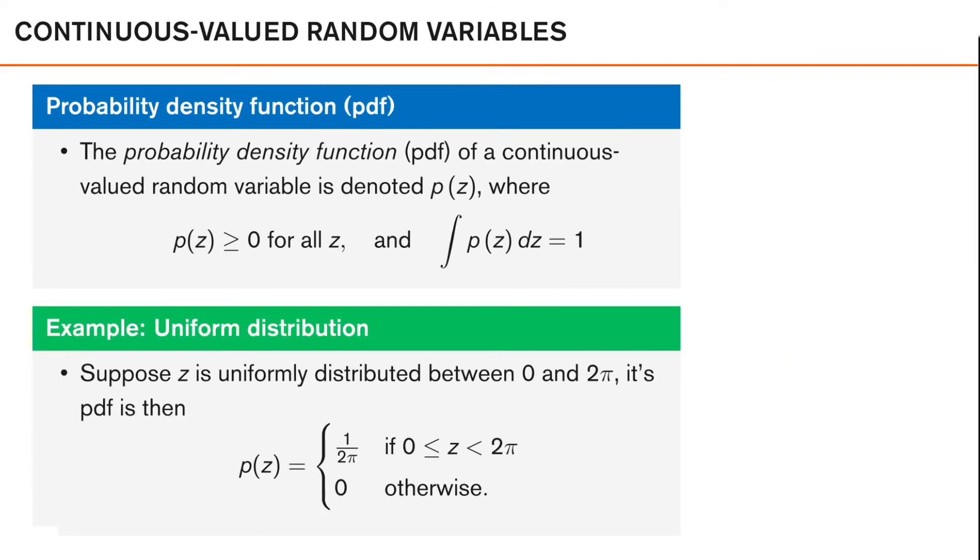Now, let's look at the corresponding description for continuous valued random variables, which we call the probability density function, or PDF for short. So the probability density function of a continuous valued random variable is denoted as lowercase p(z). And again, the probability density of any value of z needs to be greater or equal to 0. And if we integrate p(z) over all values of z, this integral needs to be 1.